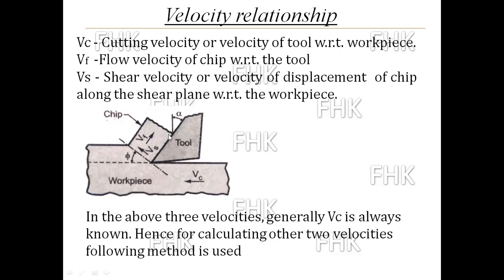VC is the velocity of tool with respect to workpiece. The second one is VF — that is the flow velocity of chip with respect to tool. The third one is VS, which is shear velocity, or the velocity of displacement of chip along the shear plane with respect to workpiece. So these three velocities are working in orthogonal cutting.